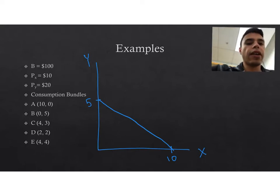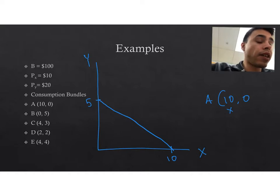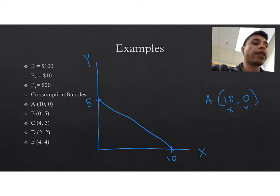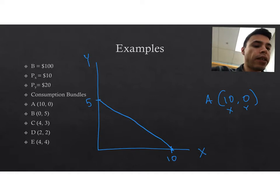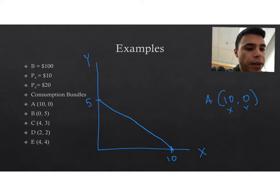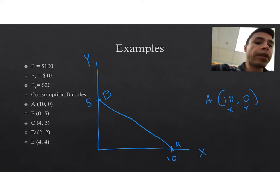Point A is one consumption bundle. Consumption bundles are ordered pairs — the first element corresponds to X and the second corresponds to Y. So point A, the consumption bundle (10, 0), would be exactly on the boundary of the affordable set — it's the horizontal intercept and it's affordable because 10 units of good X at $10 each costs exactly $100. Point B, where we spend all our money on good Y, is the other intercept — 5 units of good Y at $20 each is also $100.